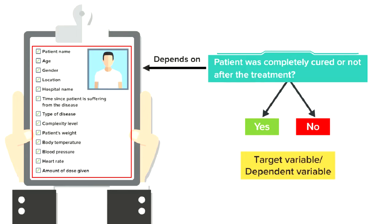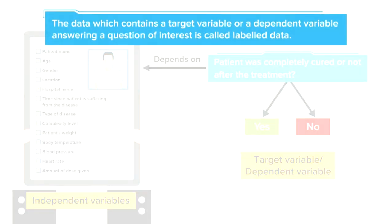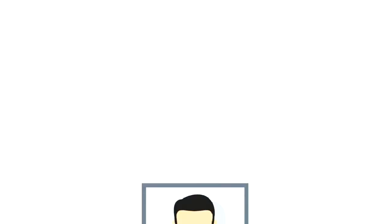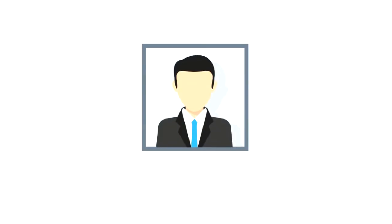This additional information is what we call a target variable or an output variable since it answers the question of whether the patient was cured or not. This target variable is also called a dependent variable since its value — yes or no — may depend on some of the other information we have about the patient such as gender, weight, age, treatment dose, treatment duration, etc. And this other information is referred to as independent variables. Such data which contains a target variable or a dependent variable answering a question of interest is called labeled data.